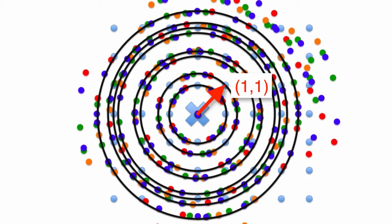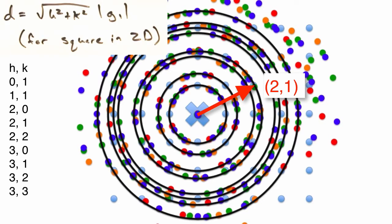Since each point is found from an integer multiple of g vectors, can we just use the h, k values to determine the distance to each sphere? Yeah we can. Using this distance equation, we plug in different values for h and k and can determine the order of their reflections as so.